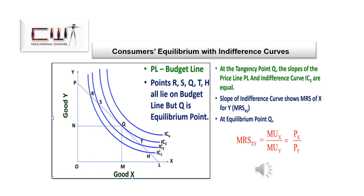The highest indifference curve with a point on the budget line is the one that just touches it — point Q gives the highest level of utility. This is the point of consumer's equilibrium because the slopes of the price line and the indifference curve are equal. It is also necessary that at the tangency point, the marginal rate of substitution must be diminishing; otherwise, the equilibrium will not be stable.